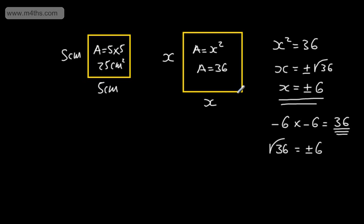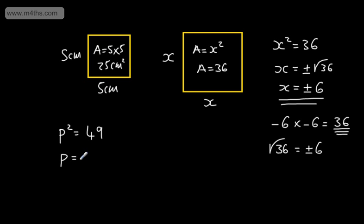So that's a nice, straightforward quadratic equation — the easiest way to deal with them. Let's say we had p squared equal to 49. We take the square root of both sides, and p is equal to plus or minus the square root of 49, which gives us p equals plus or minus 7. Remember, this is the same number multiplied by itself.